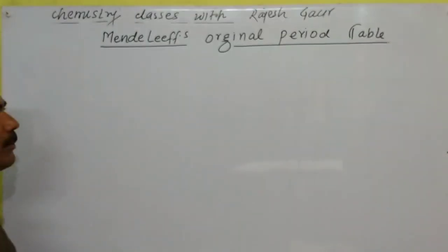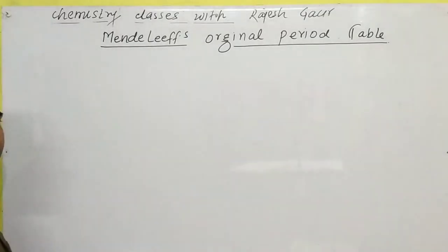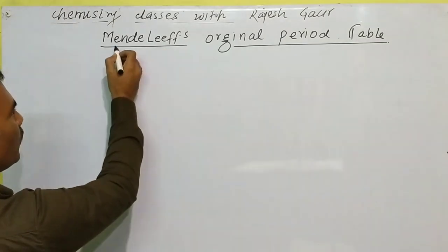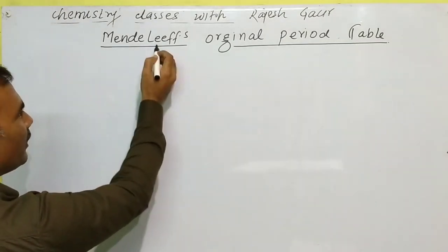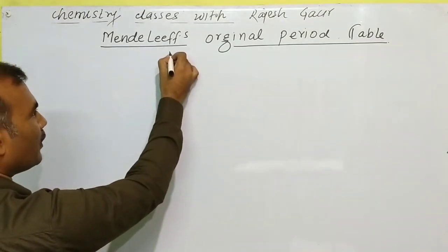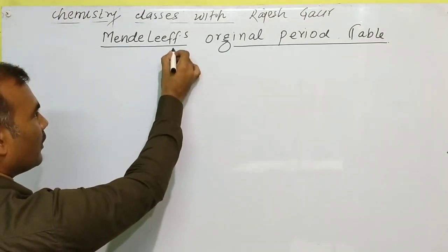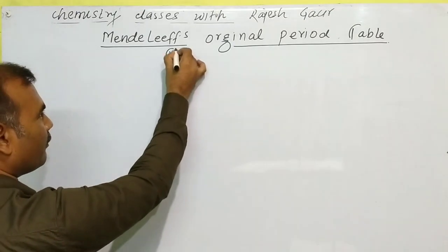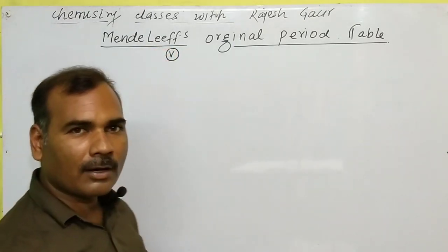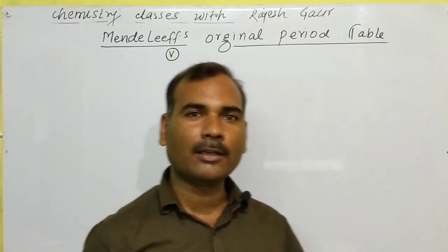Next heading: Mendeleev's Original Periodic Table. There are two types of Mendeleev's periodic tables. One is the original Mendeleev's table, and the other is the modified Mendeleev's table.